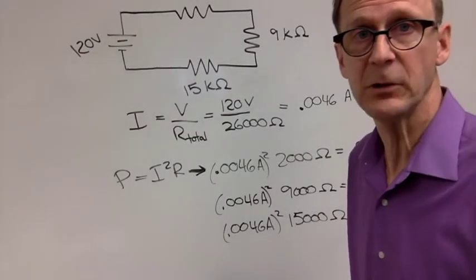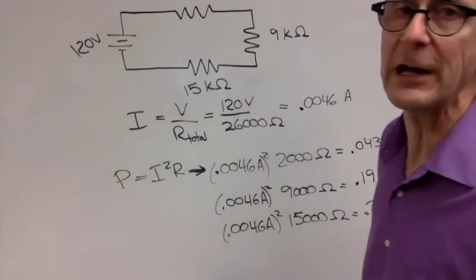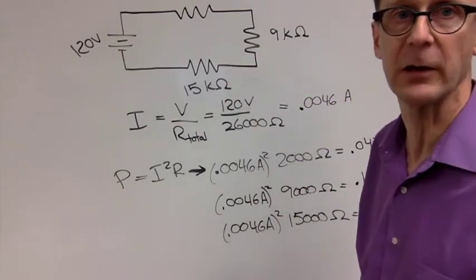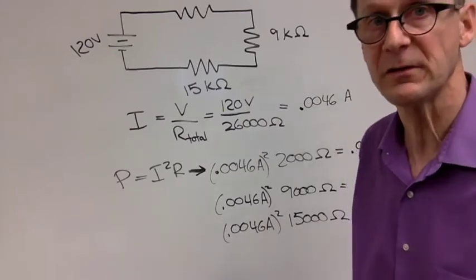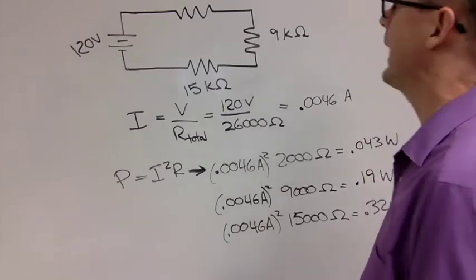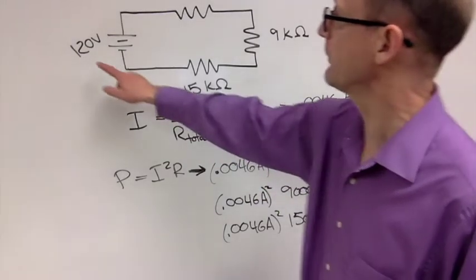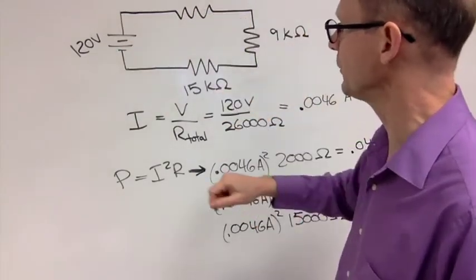Now let's do a similar exercise, and we're going to change the circuit so our three resistors are now in series rather than in parallel. And so the question again is, which resistor is going to dissipate more power, which one's going to heat up more? And so in our circuit, we've got 120 volts, 2,000 ohms, 9,000 ohms, and 15,000 ohms.